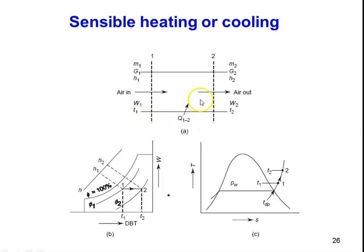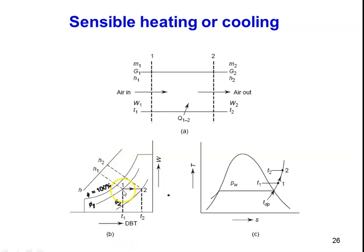Looking at the psychrometric chart, the initial condition has dry bulb temperature T1, relative humidity φ1, and enthalpy H1. The process is sensible heating from state 1 to 2, where heat is added to the air. There is no change in specific humidity of the air — sensible heating means increasing the temperature of the air without change in specific humidity.